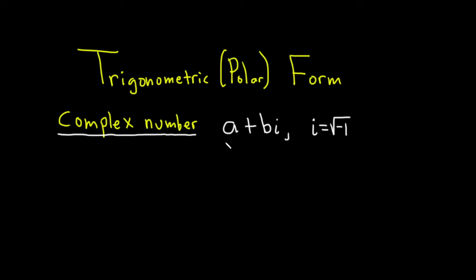a here is called the real part of the complex number, and b here is called the imaginary part.